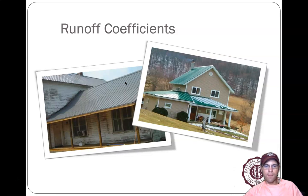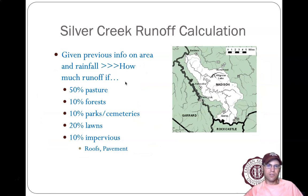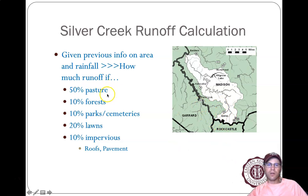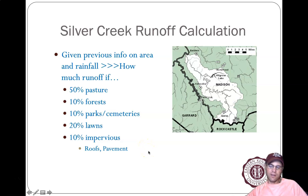We're going to apply the rational equation to Silver Creek and go through an example. If you were asked to do a runoff calculation for how much rainfall you'd expect to run off, here is the information for your coefficients — Q = CIA. Let's walk through how to solve that.